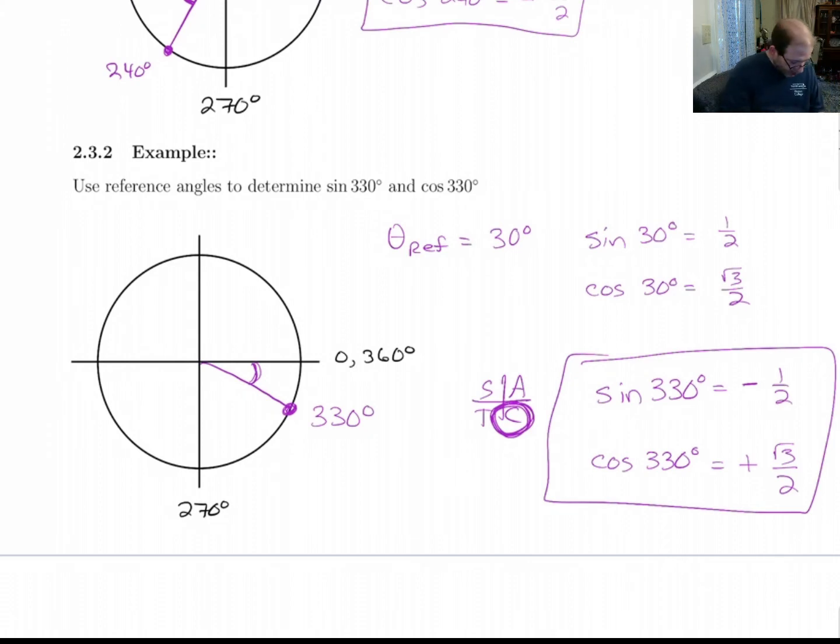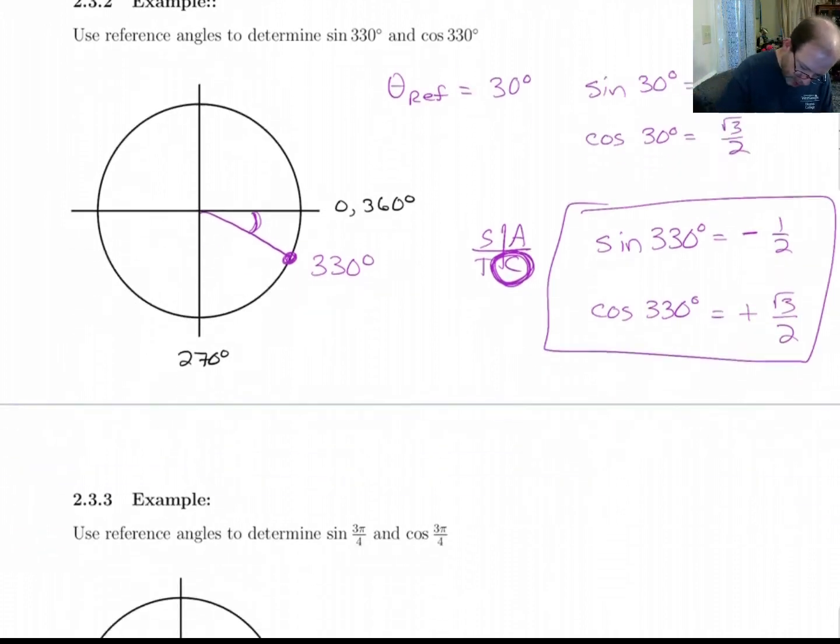And if I wanted to, I could check that on my calculator. If I put in sine of 330, it should give me negative 1 half. If I put in sine or cosine of 330, it should give me positive root 3 over 2. And that's exactly what it gives me, 0.866. All right. Let's do one more of these.